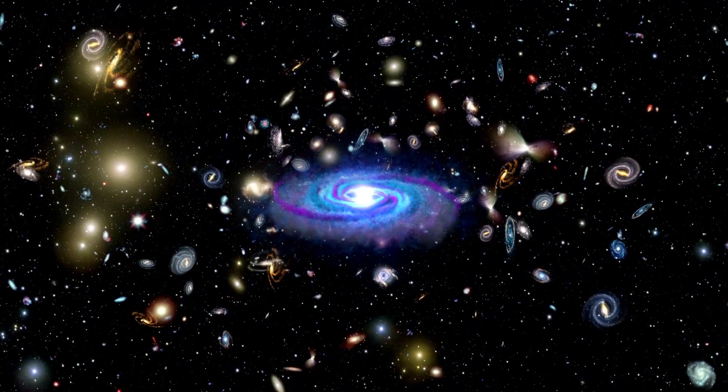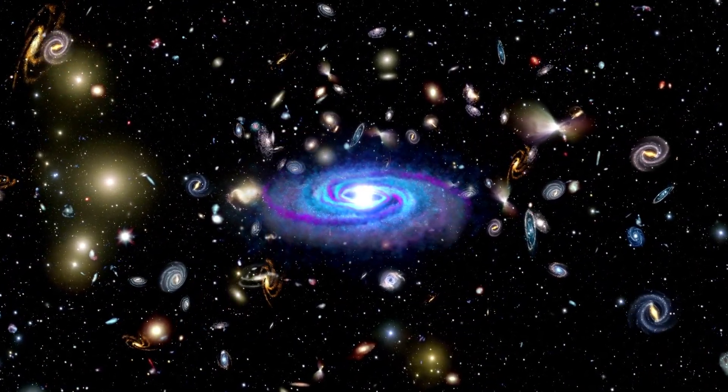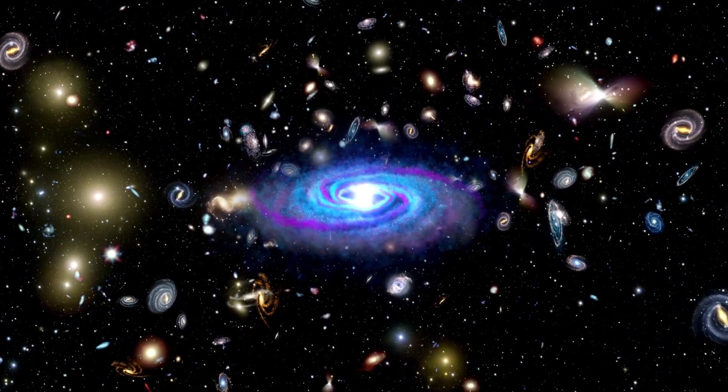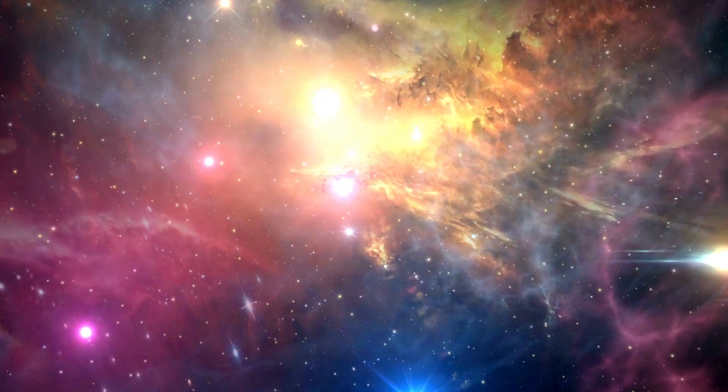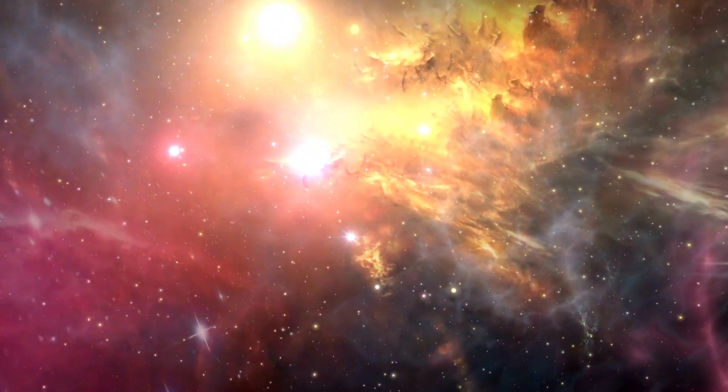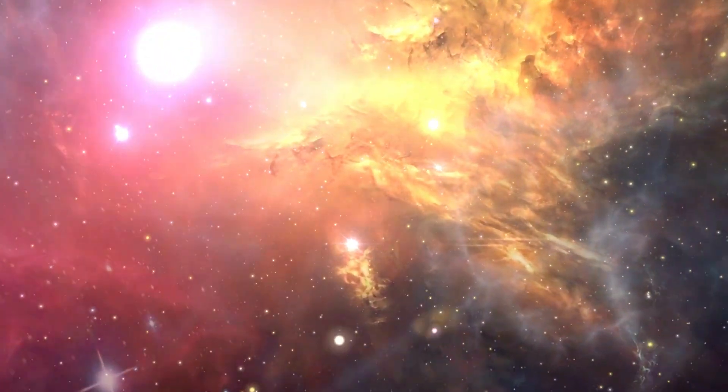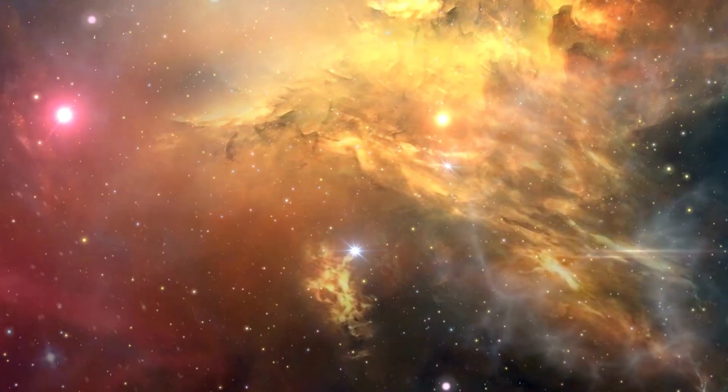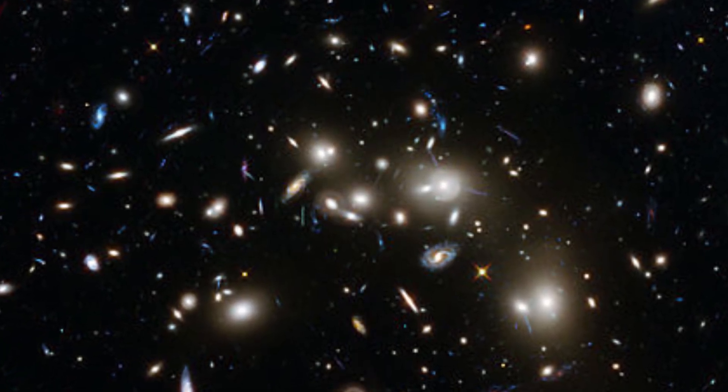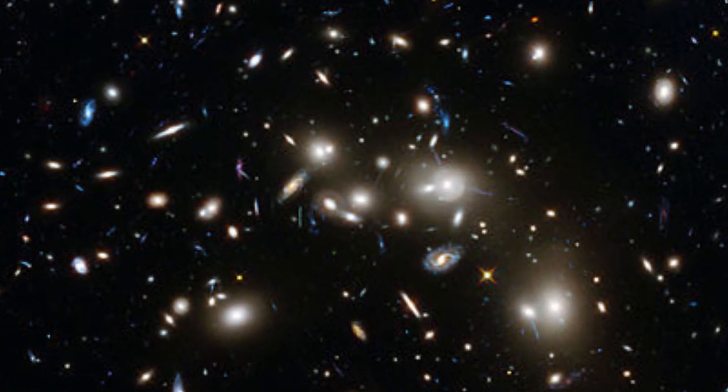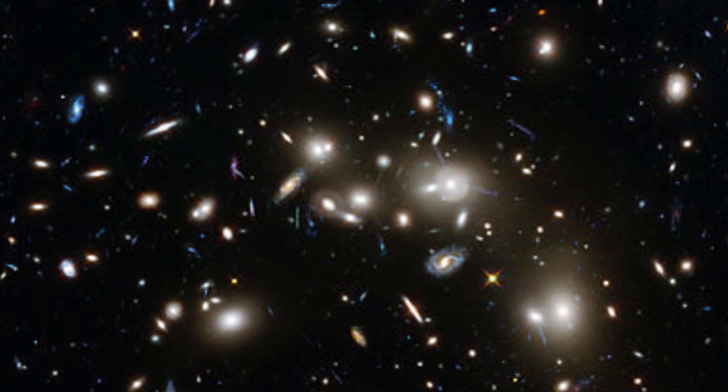The striking images captured by the James Webb Telescope have challenged our understanding of the origins of the universe. Specifically, these images directly contradict the Big Bang hypothesis, which has long been considered an unquestioned truth by most cosmology theorists. The galaxies captured in these images appear to be small, smooth, old, and numerous compared to the predictions of the Big Bang hypothesis.